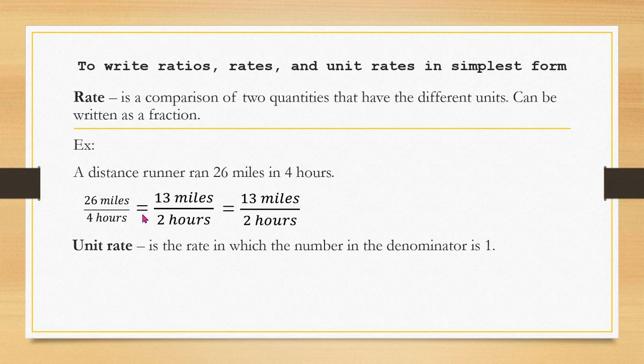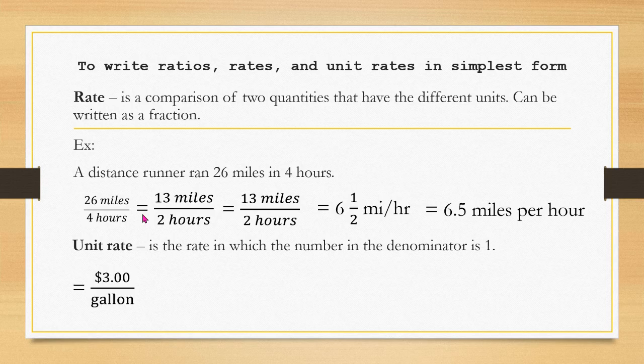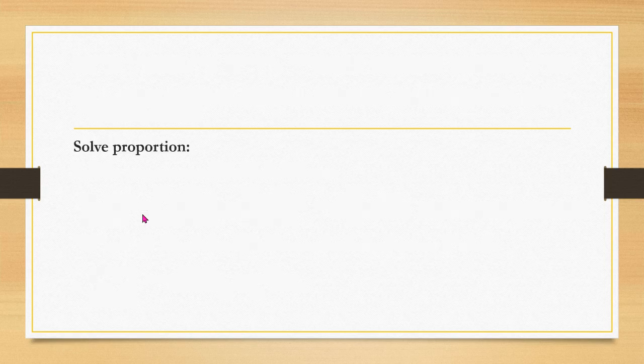Now, what is the difference between a rate and a unit rate? A unit rate is when the denominator is 1. For example, 13 miles over 2 hours can be expressed as 6.5 miles per hour — that is the unit rate. Another example: 3 dollars per gallon is also stated as a unit rate.